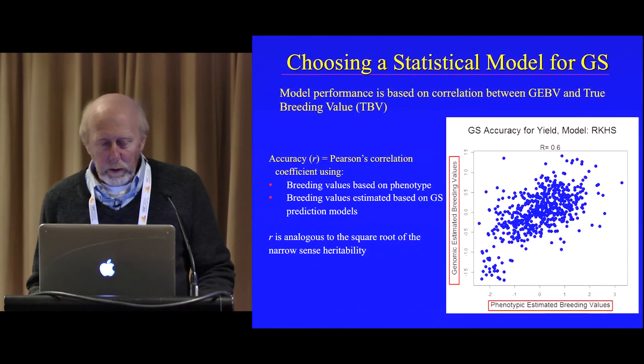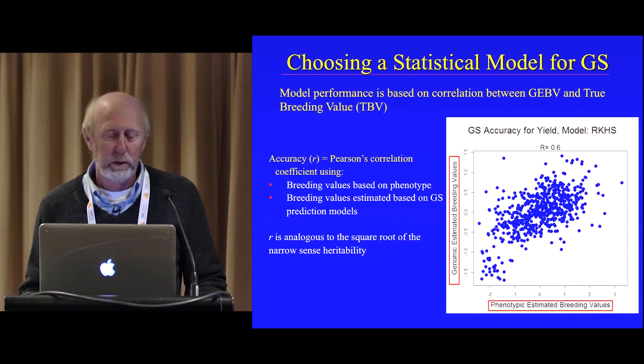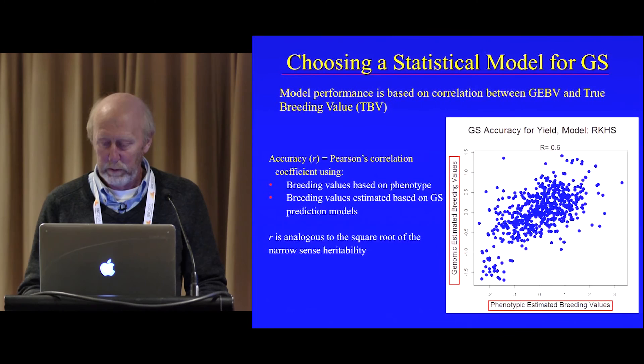To determine the accuracy of these models, we do a Pearson correlation between the predicted breeding values and the observed breeding values, and that correlation is analogous to the square root of the narrow-sense heritability.